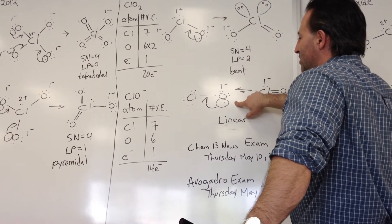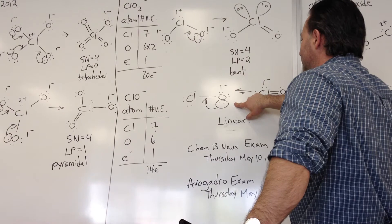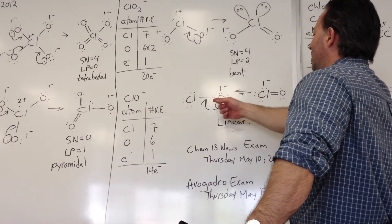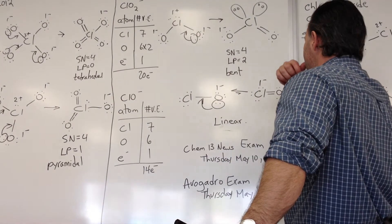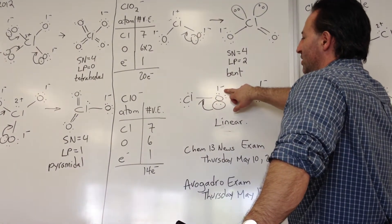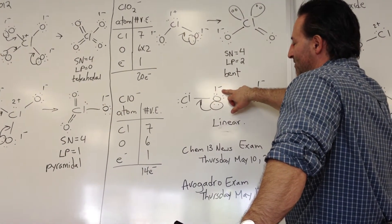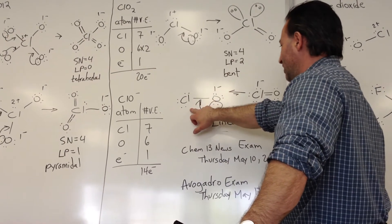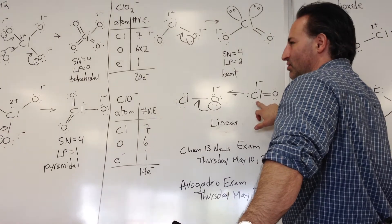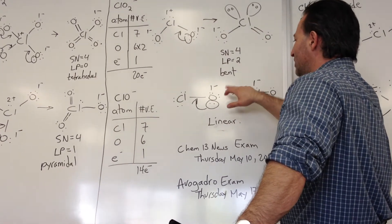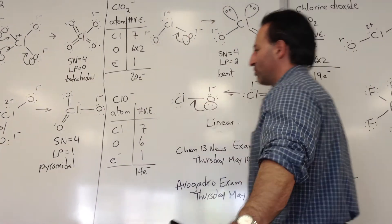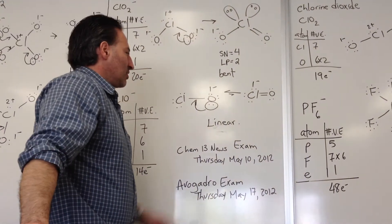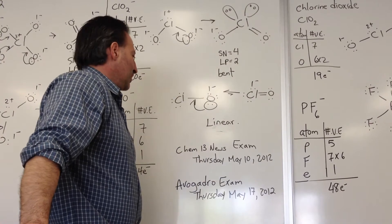The last one is the hypochlorite anion. There are two possible structures, although I favor the one where the negative charge is on the oxygen atom, because oxygen is more electronegative than chlorine. The other is also a possibility, which is why I drew an equilibrium arrow showing the preferred structure. There's no defined geometry beyond linear because there are only two atoms.